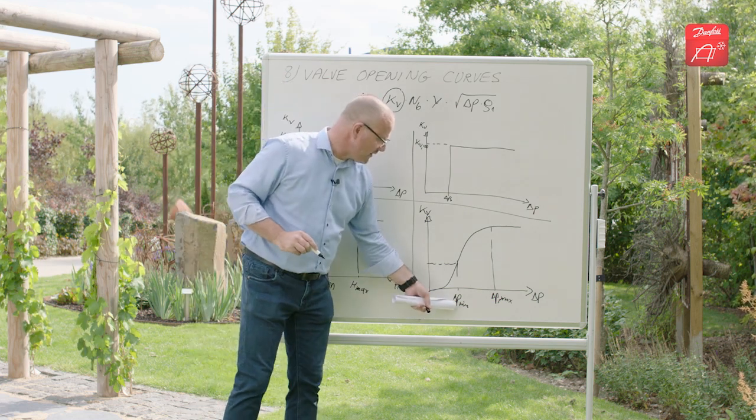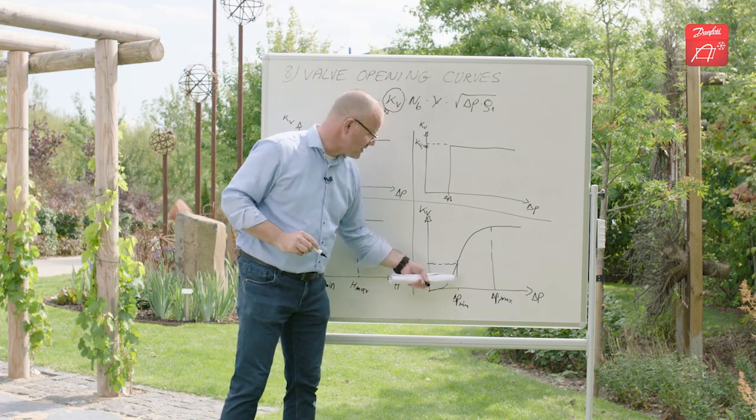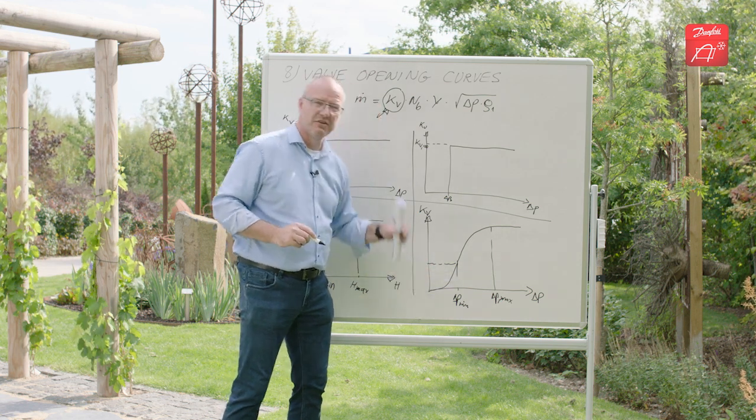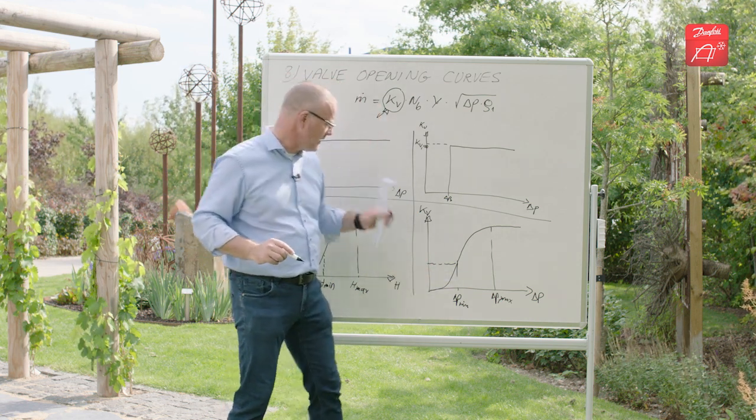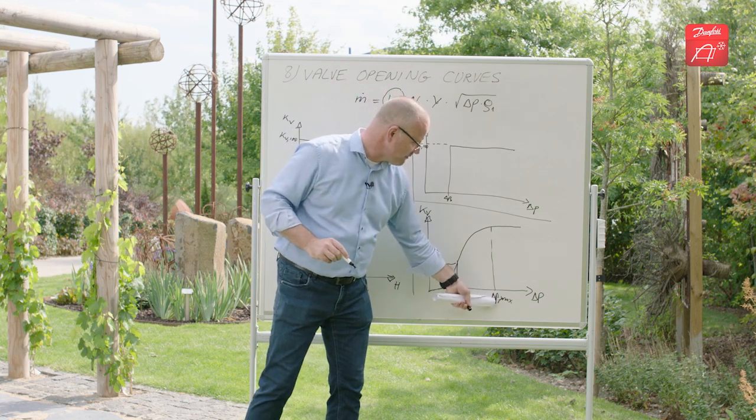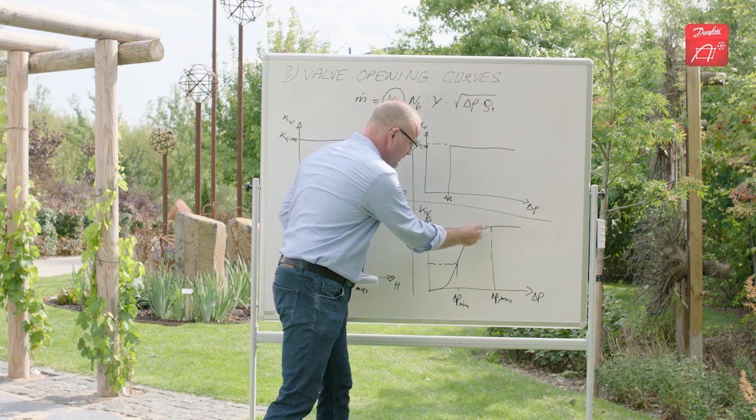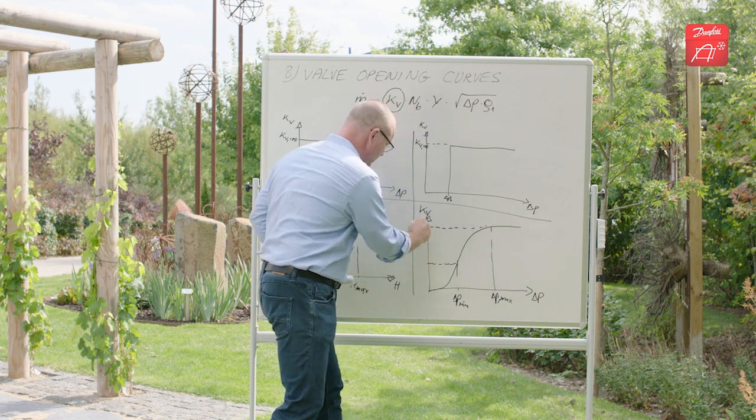Again, we have a minimum pressure drop below which we do not recommend to operate the valve. If you go below this, you have a chance of valve fluttering. We have a maximum pressure drop at which the valve is fully open. So here we have the fully open kV value.